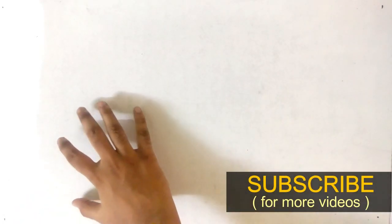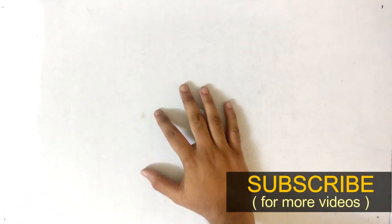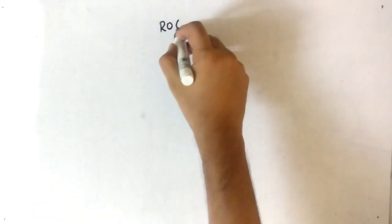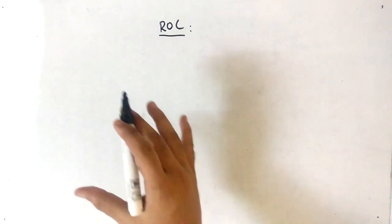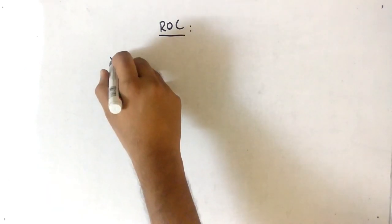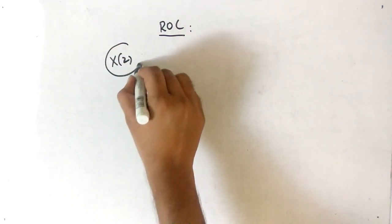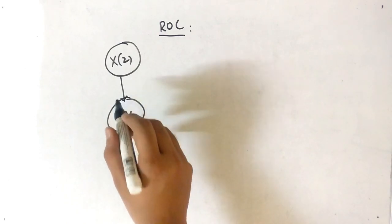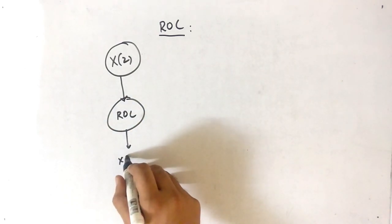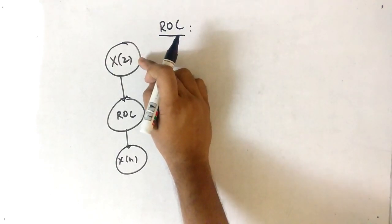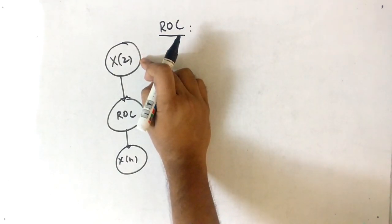Hello friends. In the series of how to solve GATE questions in less than 30 seconds for signals and systems, the next topic is ROC, i.e., Region of Convergence. The flow has three steps: first you get X(z), then you find the region of convergence, and after that you find x(n).